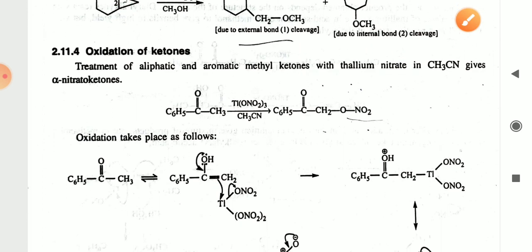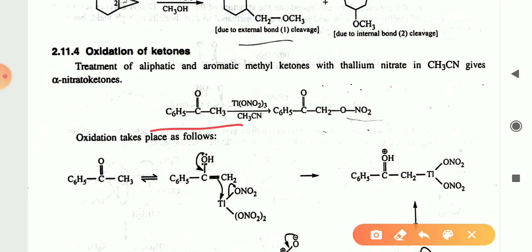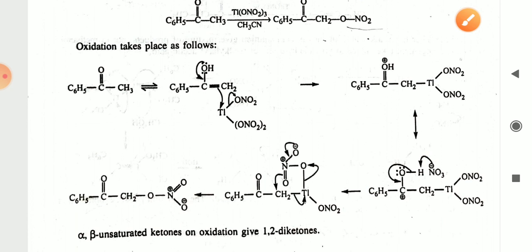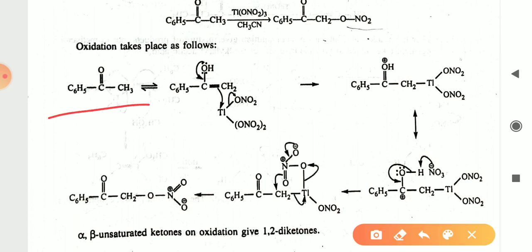Thallium nitrate is also used in oxidation of ketones. Treatment of aliphatic and aromatic methyl ketones with thallium nitrate in CH3CN gives alpha-nitro ketones. You can see the ketone undergoing oxidation with thallium nitrate to give the alpha-nitro ketone.